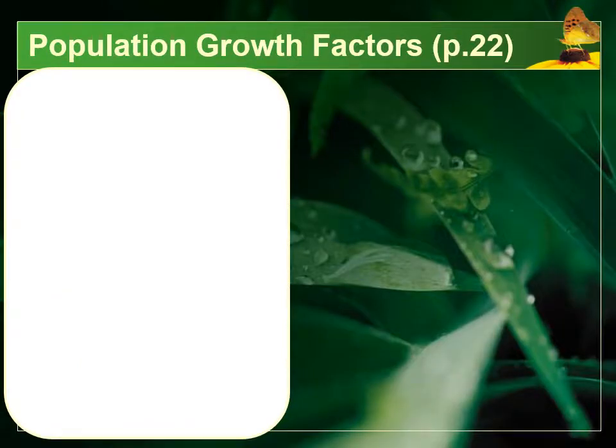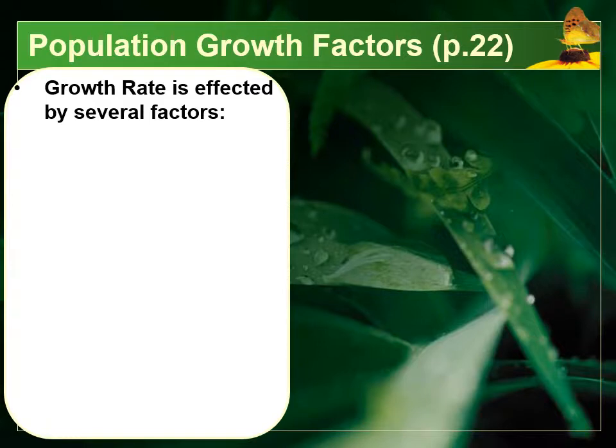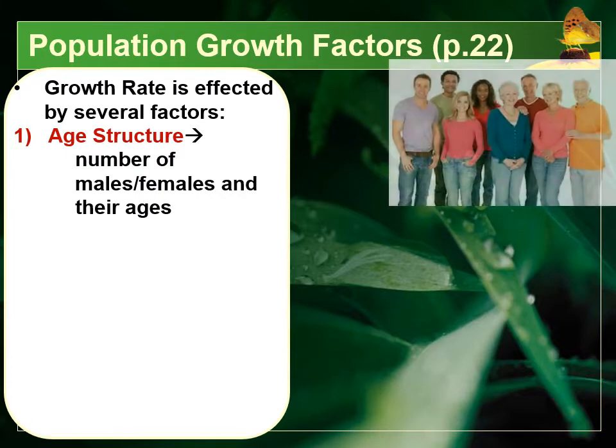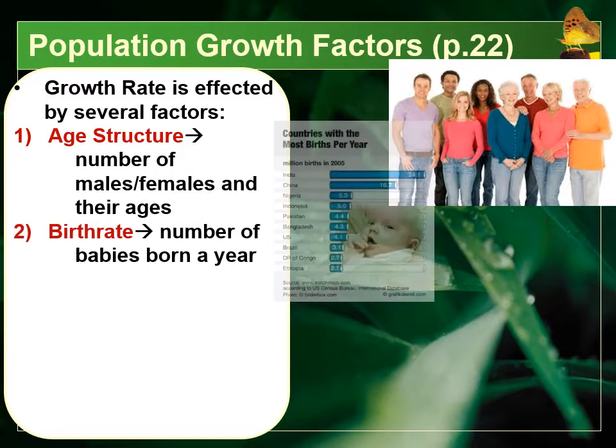Now we want to think about why a population grows over time. We have to consider the various factors contributing to its change in growth. First would be what we call age structure — how many males and females there are and what their average age is. If there are more females in a population, it will typically grow faster. If there are many young individuals, the population will increase quickly because they'll start reproducing as they age. If there are many older individuals, the population will decrease quickly as they die.